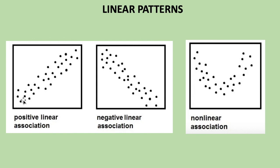The data points are creating a positive line. So the relationship is positive linear. In this graph, the data points are making a negative line. So the relationship is negative linear.